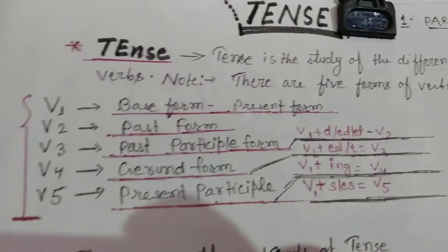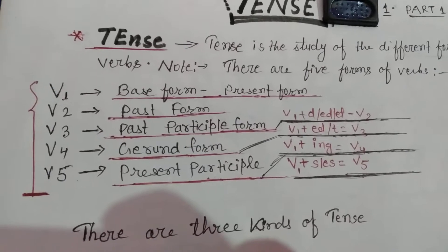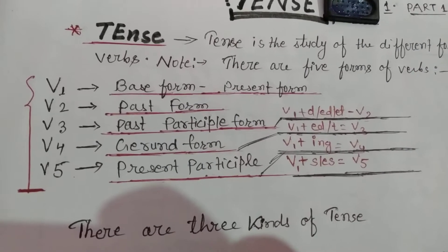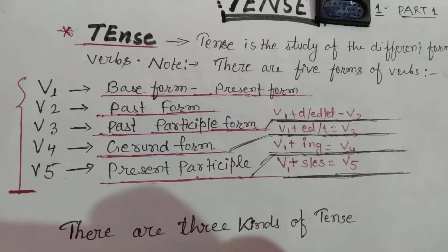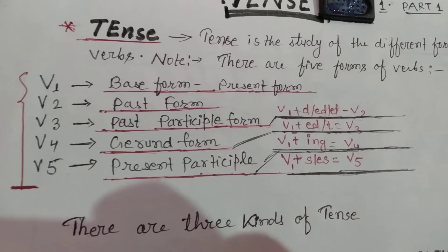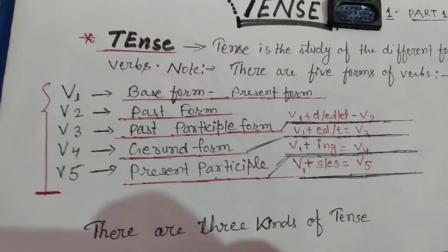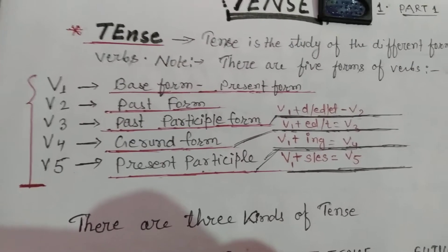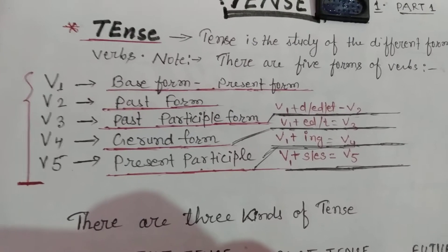Now let me give you a little more detail about the different forms of the verb. How do we make V2? V1 plus D, ED, or T equals V2. When we add D, ED, or T to V1, in most verb forms it turns into V2.